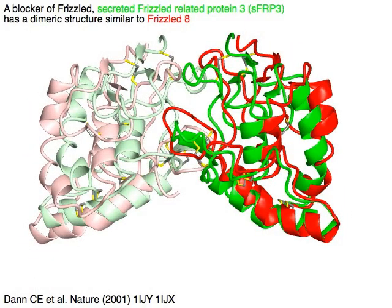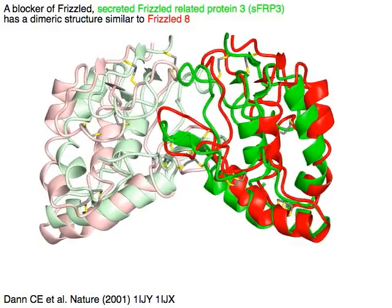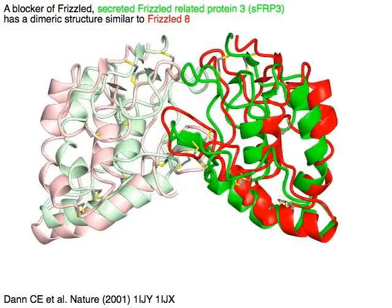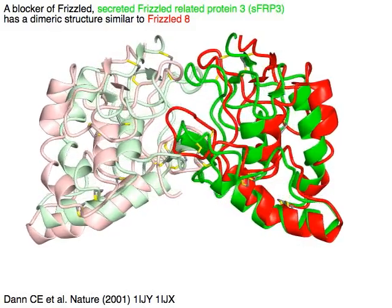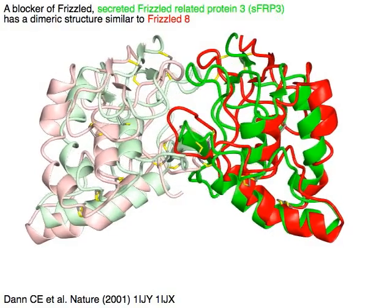A blocker of Frizzled, secreted Frizzled-related protein 3 or SFRP3 in green, has a dimeric structure similar to Frizzled in red.